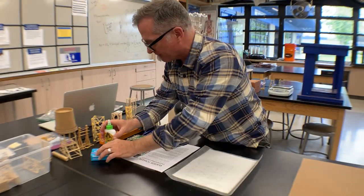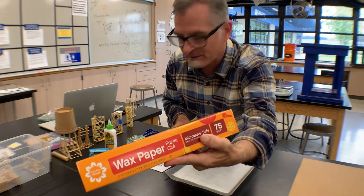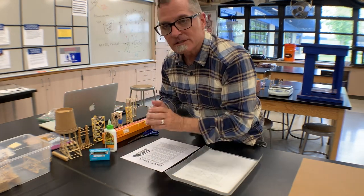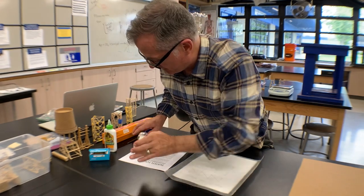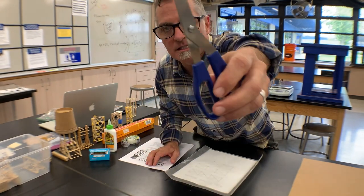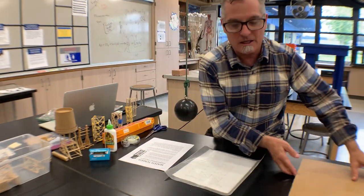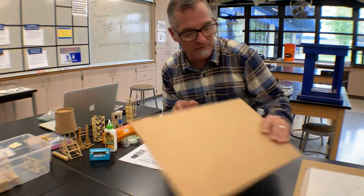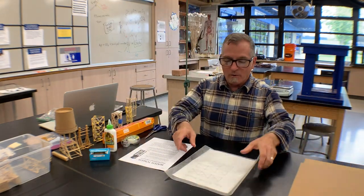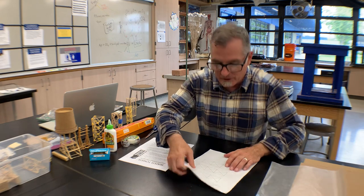You can use whatever glue you want. You're going to need some wax paper, scotch tape, some scissors, and a piece of cardboard. And that should do it. And of course you're going to need your blueprint.